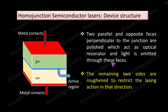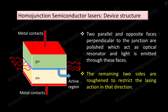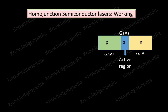As discussed previously, either one or both of the two parallel polished faces can be made partially transmitting. If one face is made partially transmitting, light will be transmitted through that face. If both faces are partially transmitting, light will emerge from both sides. This is how we obtain the laser output. In this structure, the active region is lightly doped compared to the p+ and n+ regions.